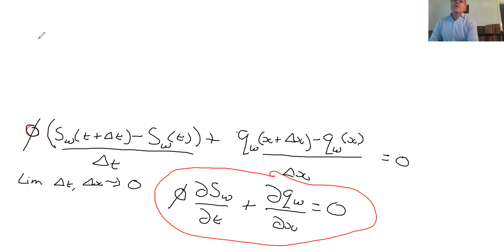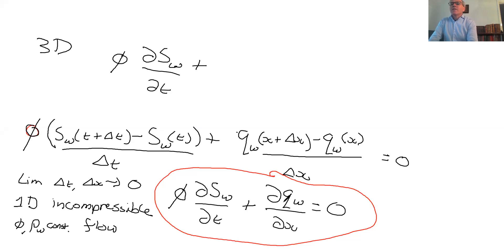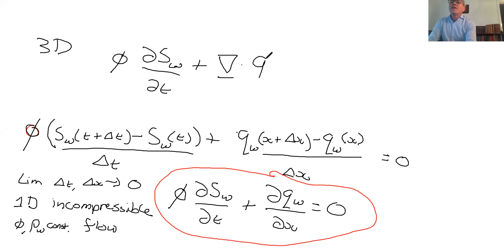In 3D, the equation is: phi times dSw/dt plus the divergence of the vector qw equals zero. The term dqw_x/dx plus dqw_y/dy plus dqw_z/dz is the divergence of qw — written as div dot q_w where q_w is a vector in three dimensions. That is the three-dimensional version of the conservation equation. More elegantly, this can also be derived using Green's theorem applied to an arbitrary volume with flux across the surface.